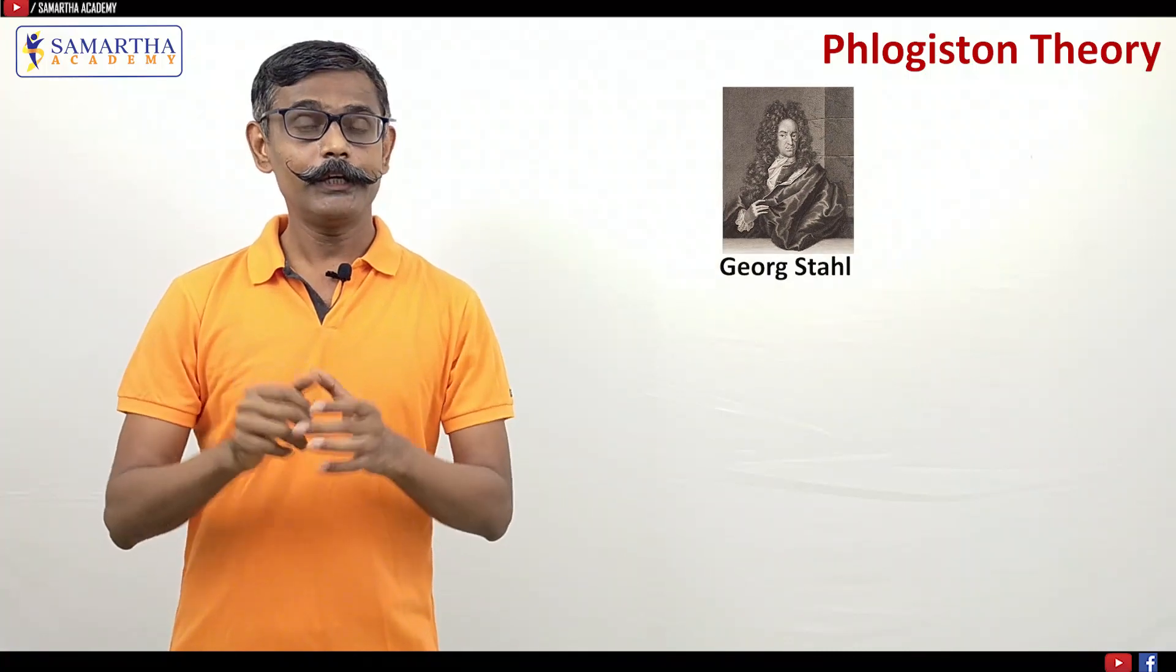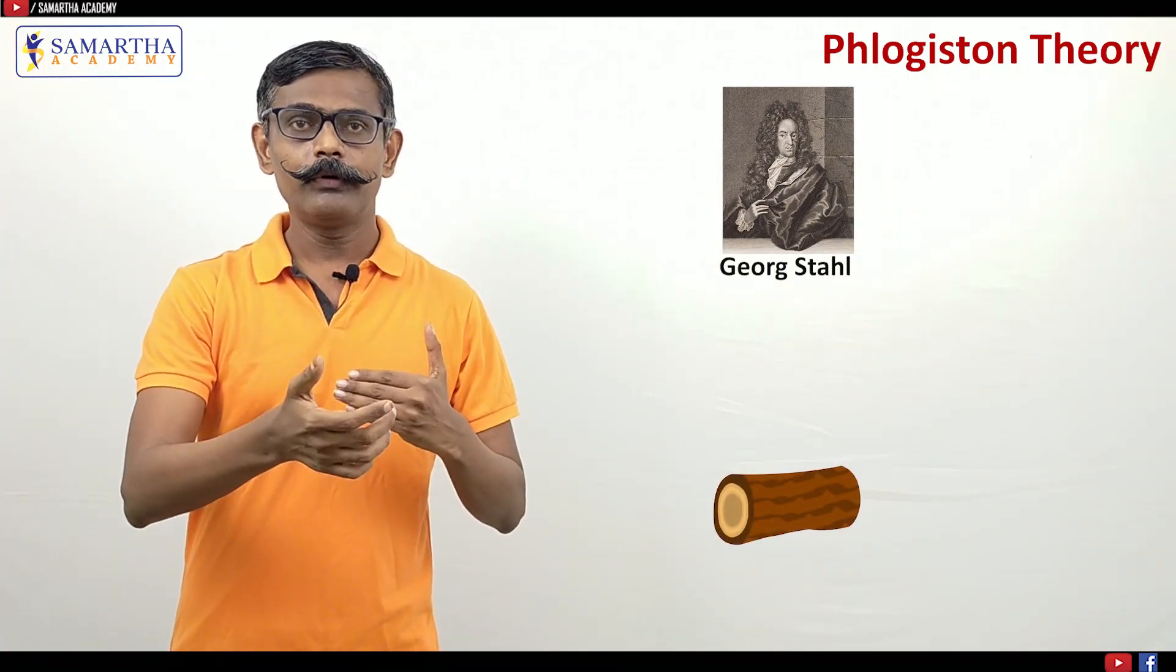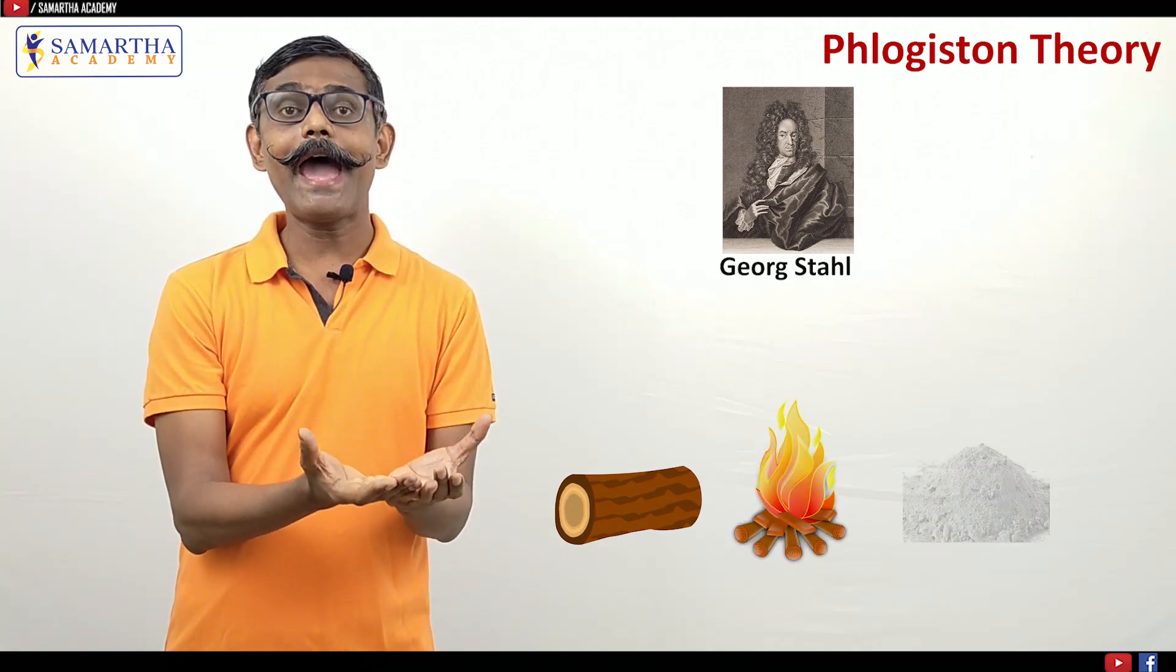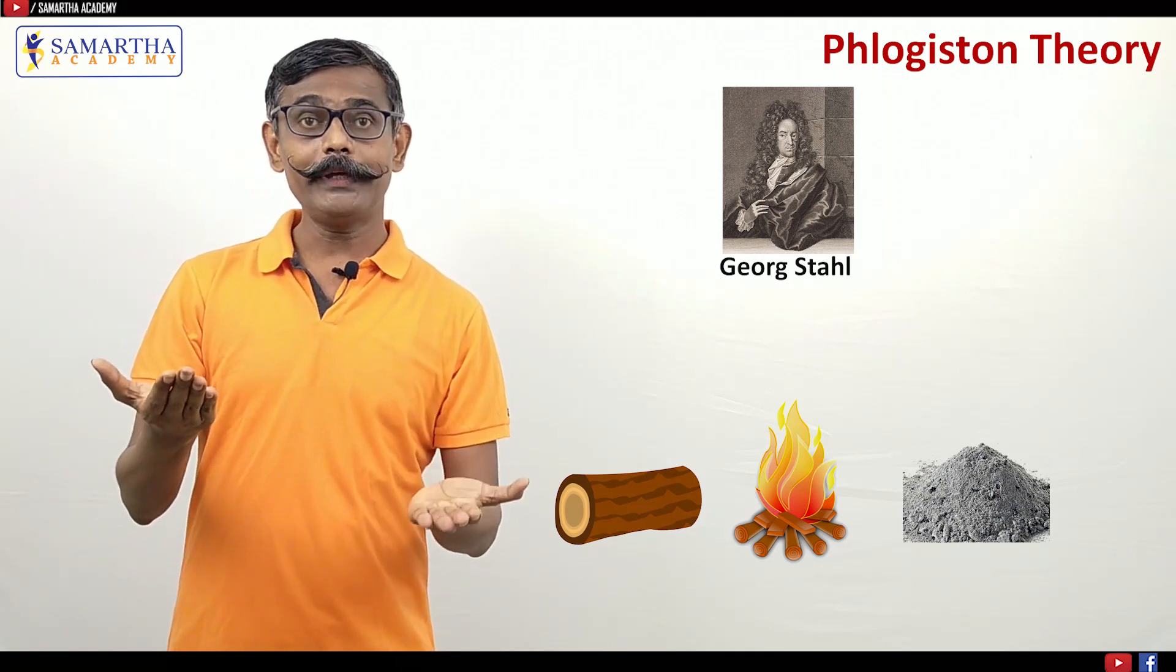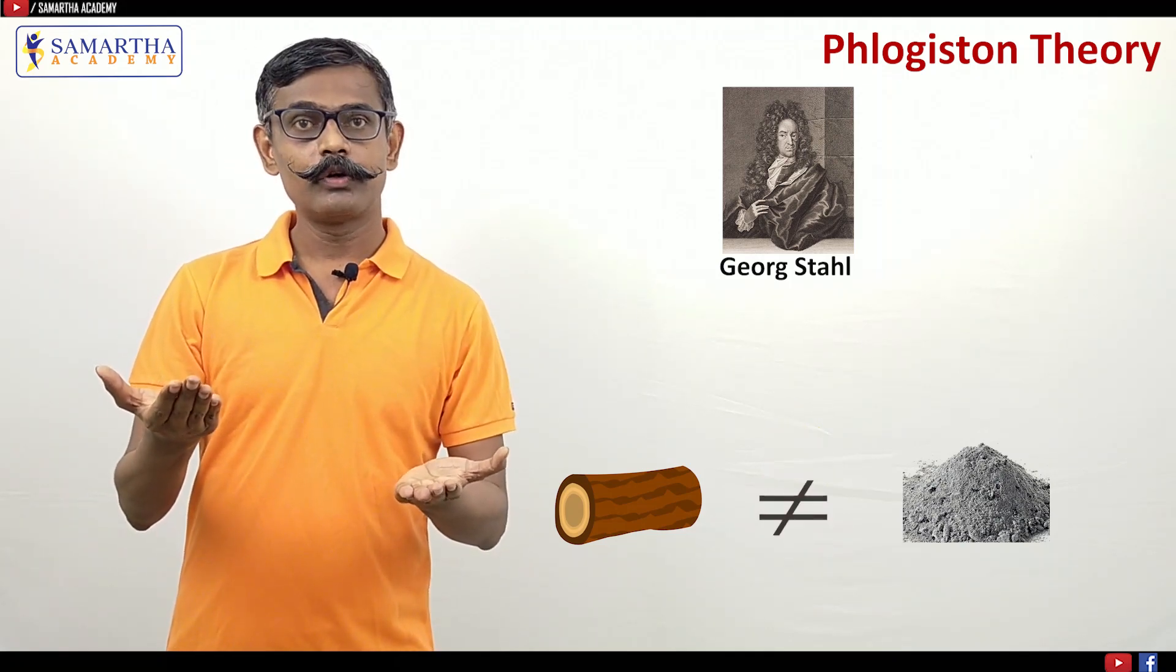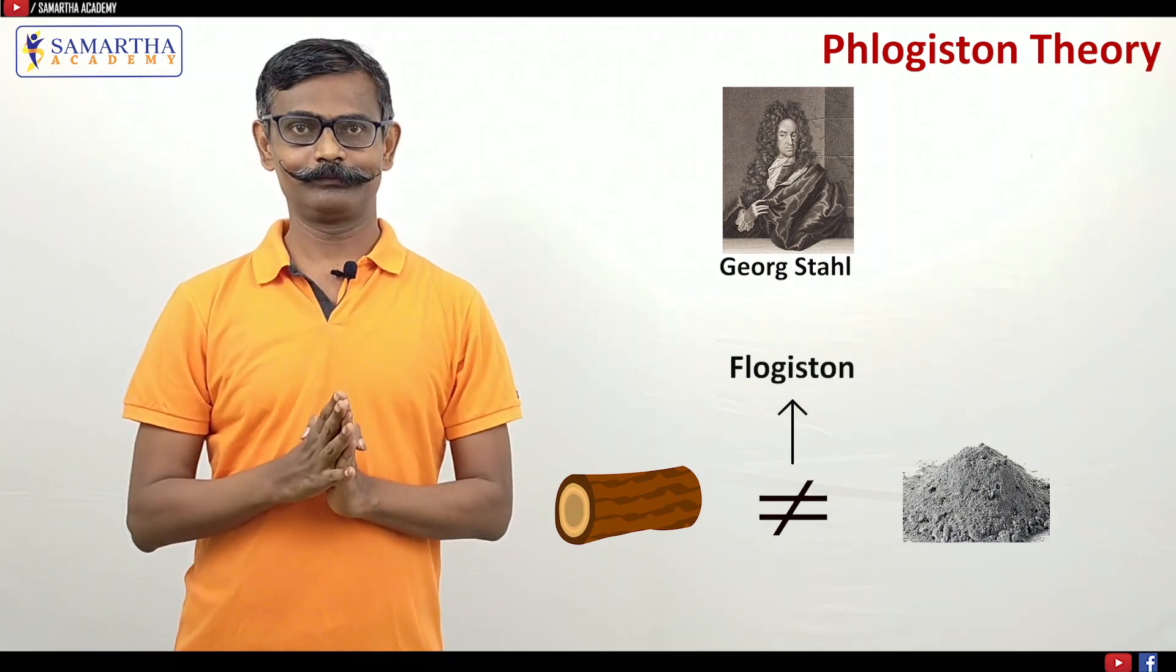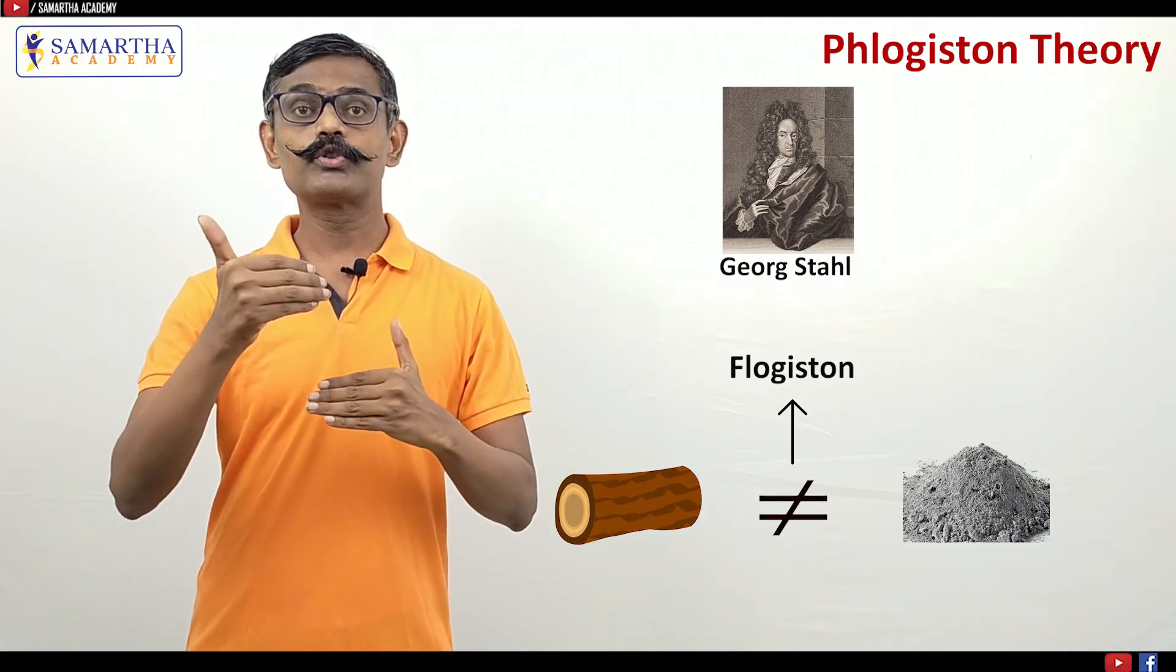What he said? If we take wood and burn it, the wood will catch fire and at last ash will be there. The weight of the wood and the weight of the ash is different. So what went out? Phlogiston went out. During combustion, Phlogiston goes out.